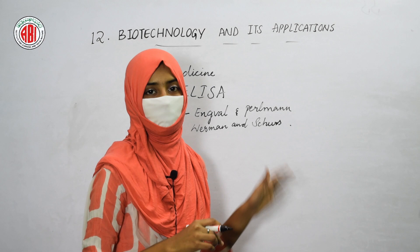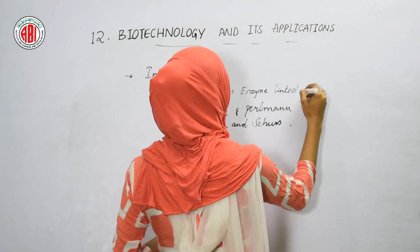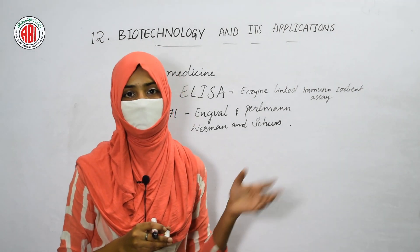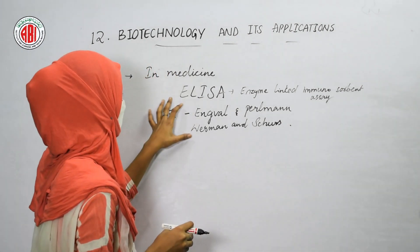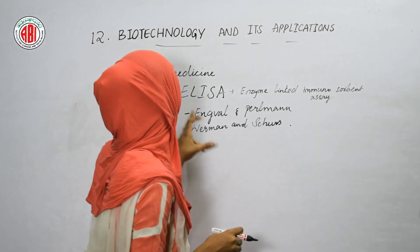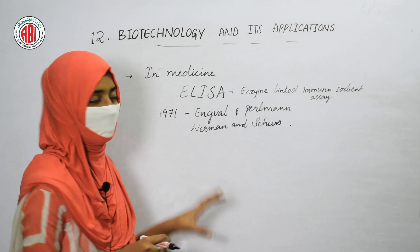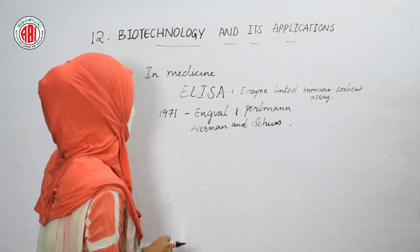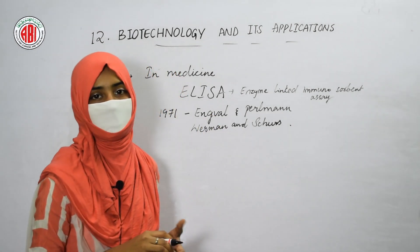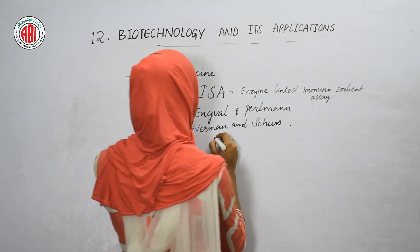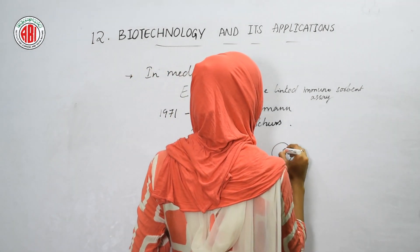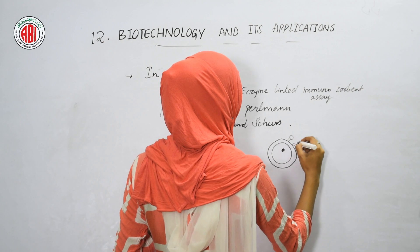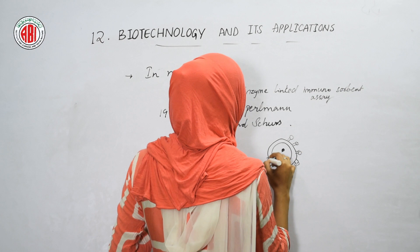Let us talk about ELISA. ELISA stands for Enzyme-Linked Immunosorbent Assay. This is a test which helps in diagnosing many different diseases. It was started in the year 1971 by a group of scientists including Engvall, Perlman, Van Weemen, and Schuurs. Let us take an example to understand how we can detect diseases through ELISA. We will take the example of HIV virus. When we look at the structure of HIV, genetic material is present inside the cell, covered by a capsid, and on the capsid some proteins named GP120 are present.